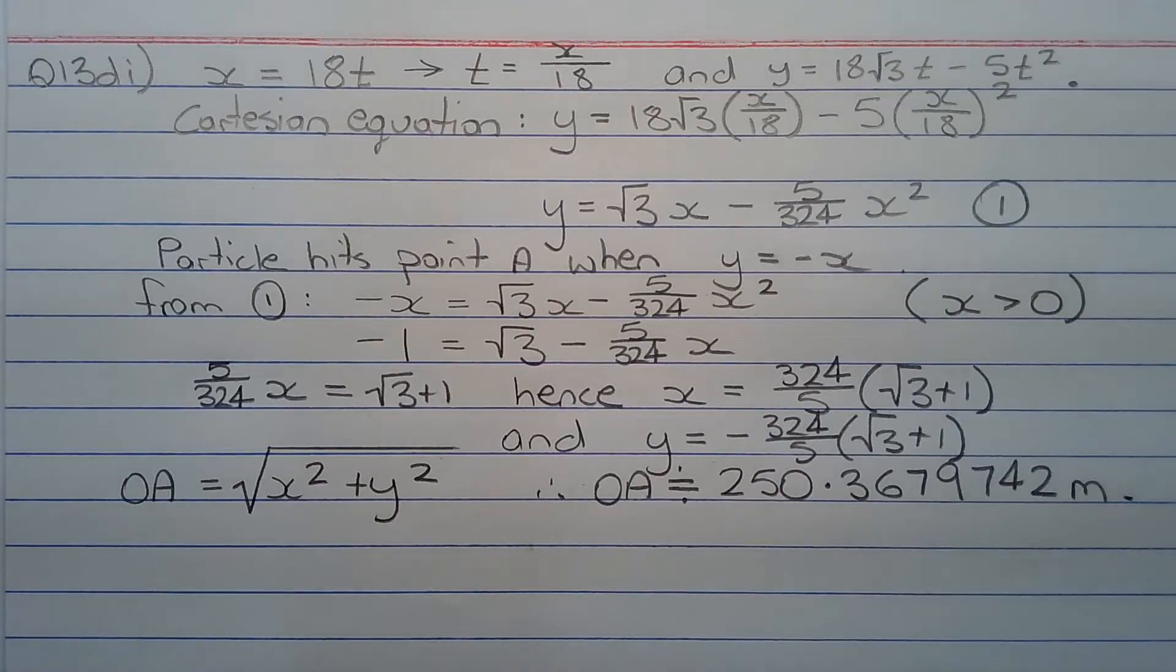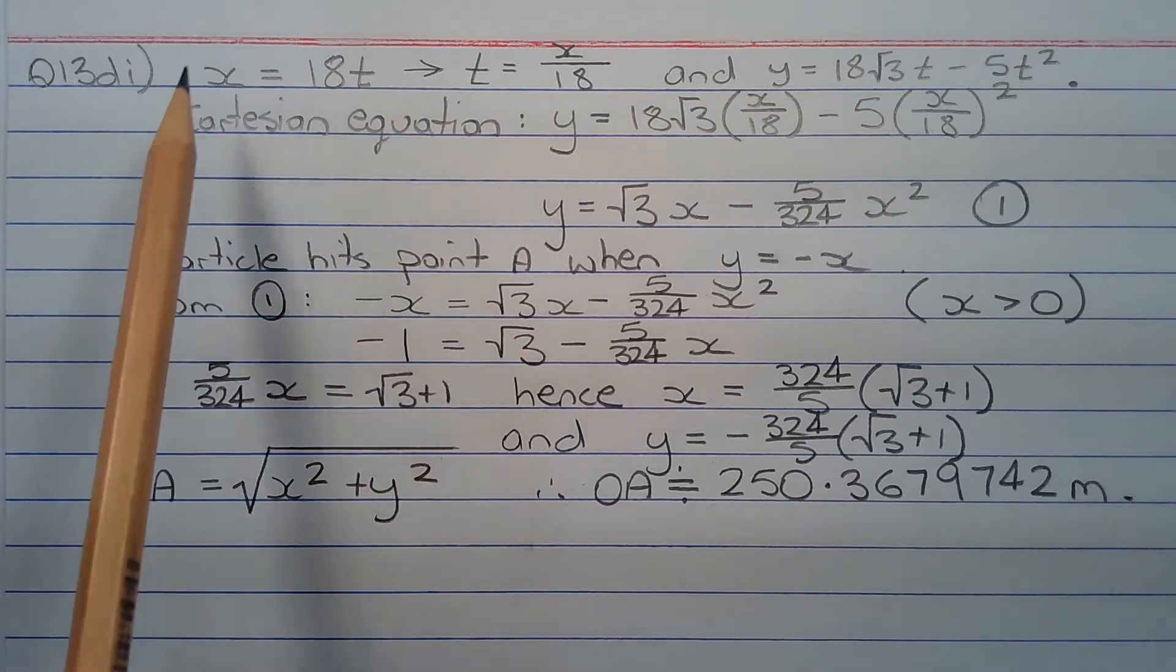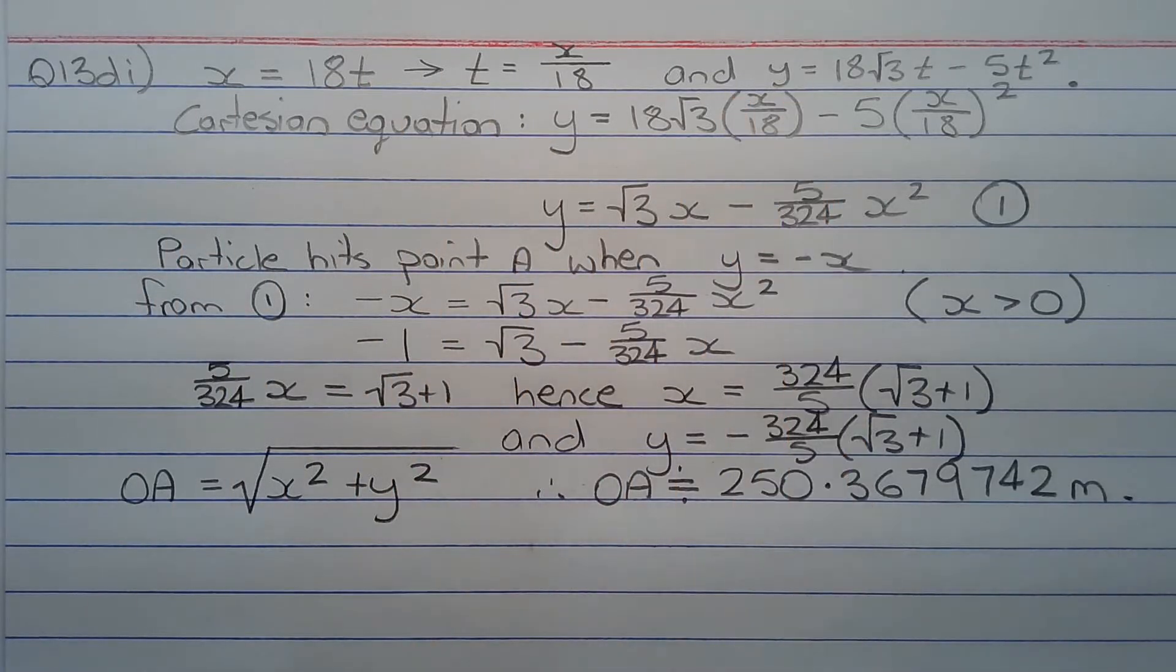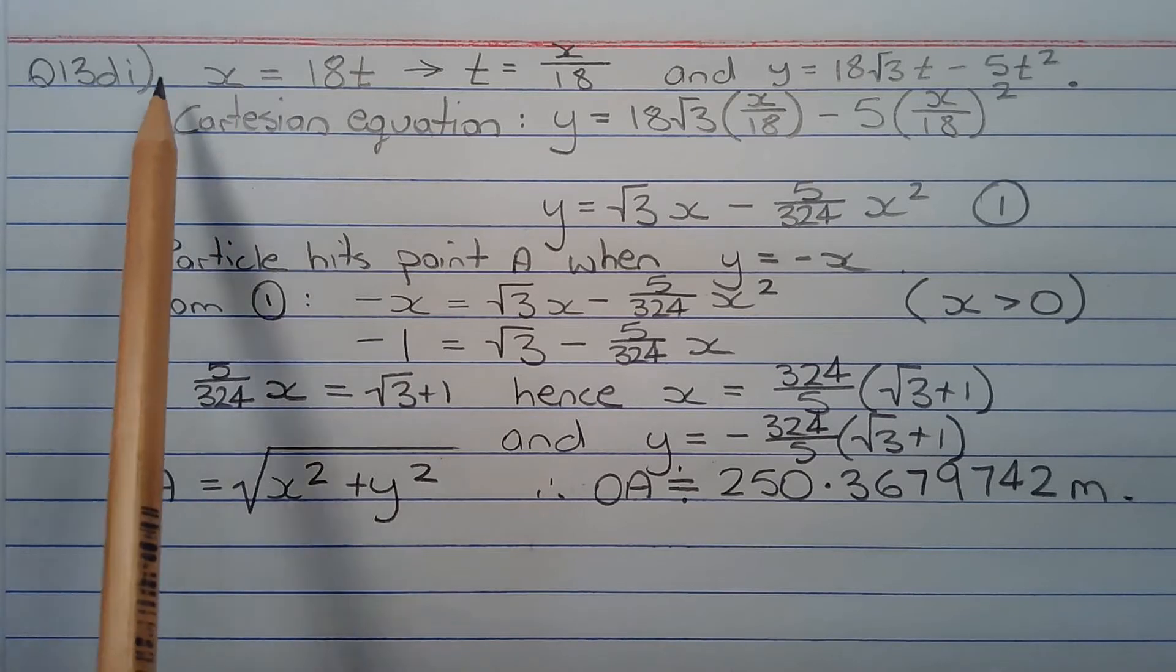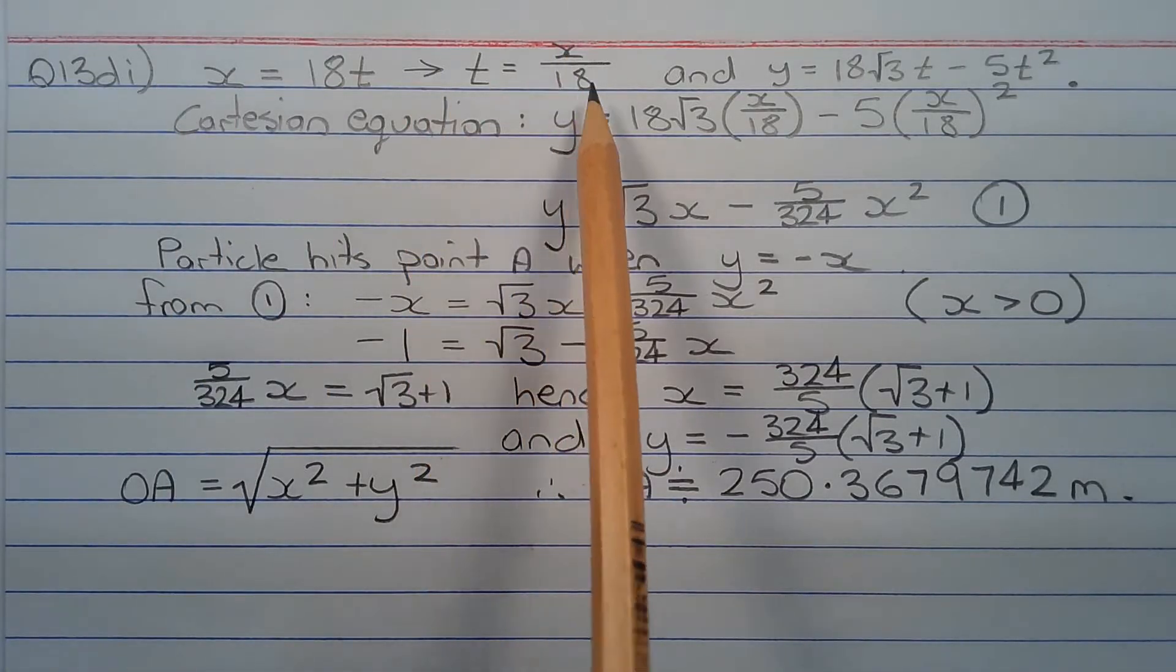One way to answer this question is to form a Cartesian equation. That is, express y in terms of x rather than y in terms of t. So starting with x equals 18t, dividing both sides of this equation by 18 to make t the subject, we get t equals x over 18.